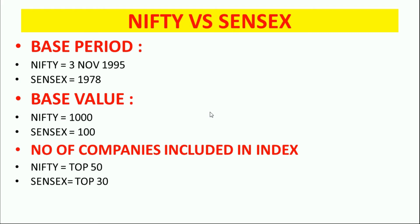Watch the video till the end. Here we will see some important points such as the base period of Nifty and Sensex. The base period of Nifty is 3rd November 1995 and for Sensex it is 1978. The base value of Nifty is 1000 and the Sensex base value is 100. The number of companies included in the index: for Nifty it is the top 50 companies and for Sensex it is the top 30 companies.